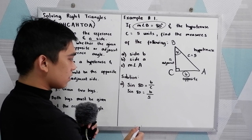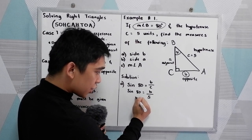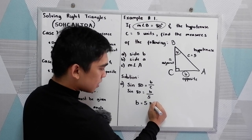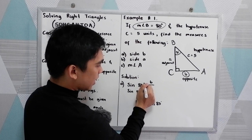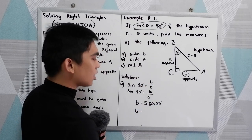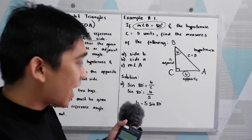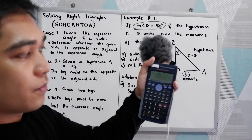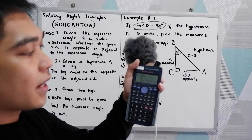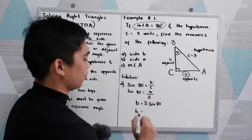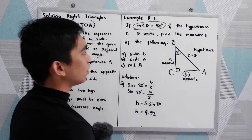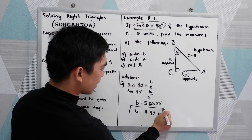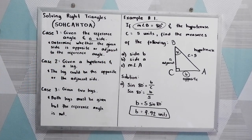Cross multiplying: B equals 5 sine 80°. Enter your calculator — press 5, then the sine function, then 80, then equal sign. That gives 4.92 units. So side B equals 4.92 units.